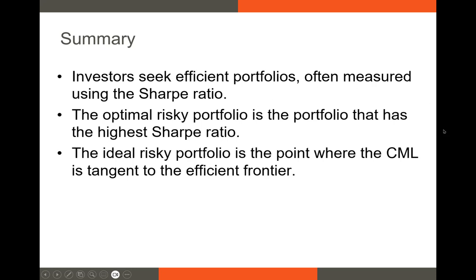To summarize: we talked about investors demanding efficient portfolios, often measured using the Sharpe ratio. Our ideal portfolio is the one with the highest Sharpe ratio — in modern portfolio theory, that's where the capital market line is tangent to the efficient frontier. We'll be doing a lot of analysis with this, working extensively in Excel over the next several weeks. If you have any questions, feel free to reach out. Thank you.